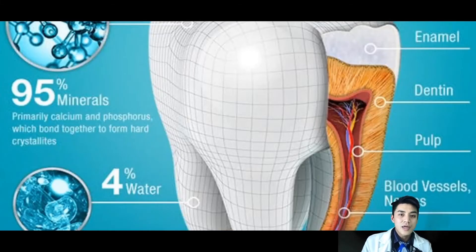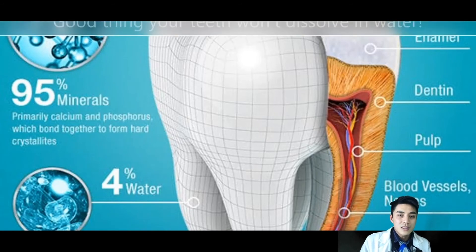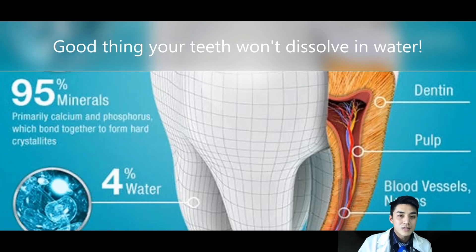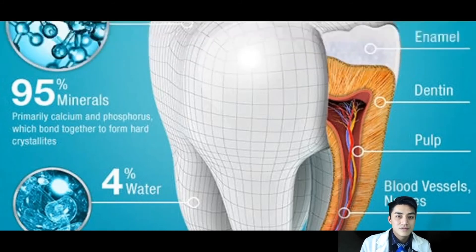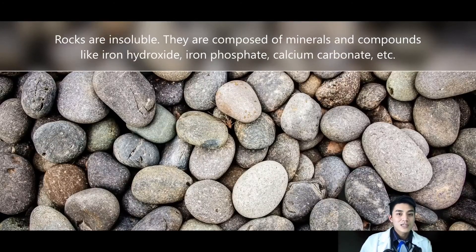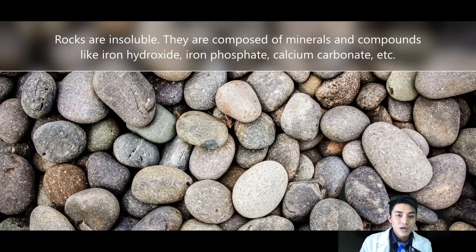Your teeth are made up of calcium phosphate — that's the mineral that gets deposited in your enamel, which is a good thing, so your teeth don't dissolve. Rocks also don't dissolve in water because they're made of insoluble minerals, like iron hydroxide, for example.